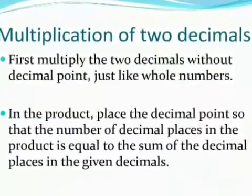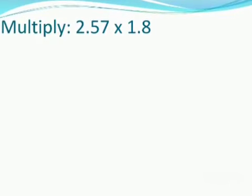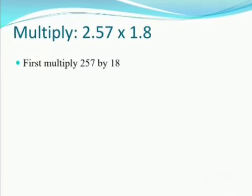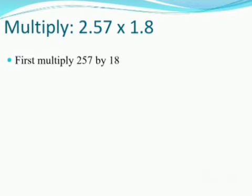To understand this better, let us take an example. Multiply 2.57 by 1.8. First of all, multiply these two numbers without decimals. So let us start the multiplication.